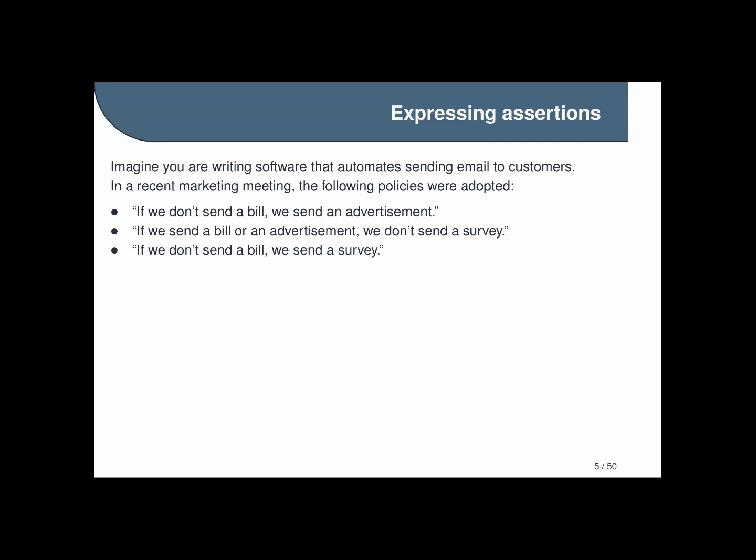And so these three policies are written down and transmitted to you and you're asked to write some code that implements them. Now you could take the approach of just writing each statement as some conditional, but it would also be nice if there was some way of figuring out what all these statements mean together and what they say we should actually do. In other words, is there a way to express our policy more clearly?